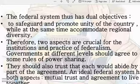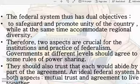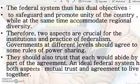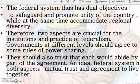Two aspects are crucial for the institution and practice of federalism. First, governments at different levels should agree to some rules of power sharing — there should always be agreement between the state and central governments. Second, they should trust that each would abide by its part of the agreement. An ideal federal system has both aspects: mutual trust and agreement to live together.